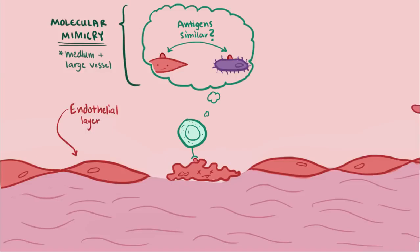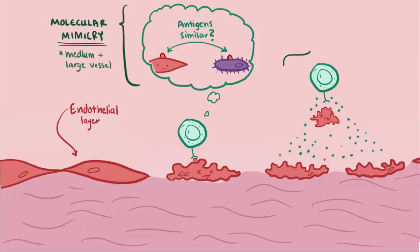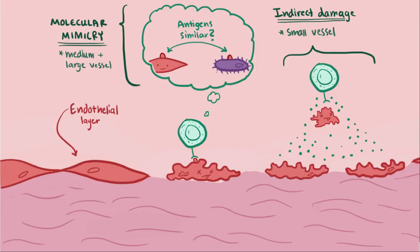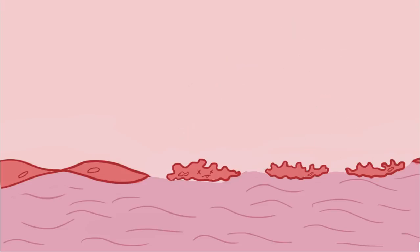Other times the immune system attacks healthy cells that are near the vascular endothelium, and the endothelial cells are only indirectly damaged. This is the situation in many small vessel vasculitides, where the immune system attacks white blood cell enzymes or other non-endothelial cell targets. Once the endothelium is damaged, either directly or indirectly, almost all vasculitis diseases progress in a similar way.